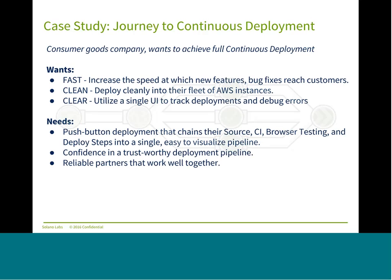The joint customer we're going to be talking about is a consumer goods e-commerce retailer, and what they really need is to achieve full continuous deployment for multiple reasons. First, they need speed — to increase the speed at which new features and bugs reach their customers. If a bug comes up on an e-commerce site, you need to know that the fix is verified and get it up as soon as possible. It needs to be clean — they need to deploy all of their code into a fleet of AWS instances. That deployment needs to be quick, traceable, and they need to be able to roll it back. They also need it to be clear — they need a single UI to track deployments and debug errors.